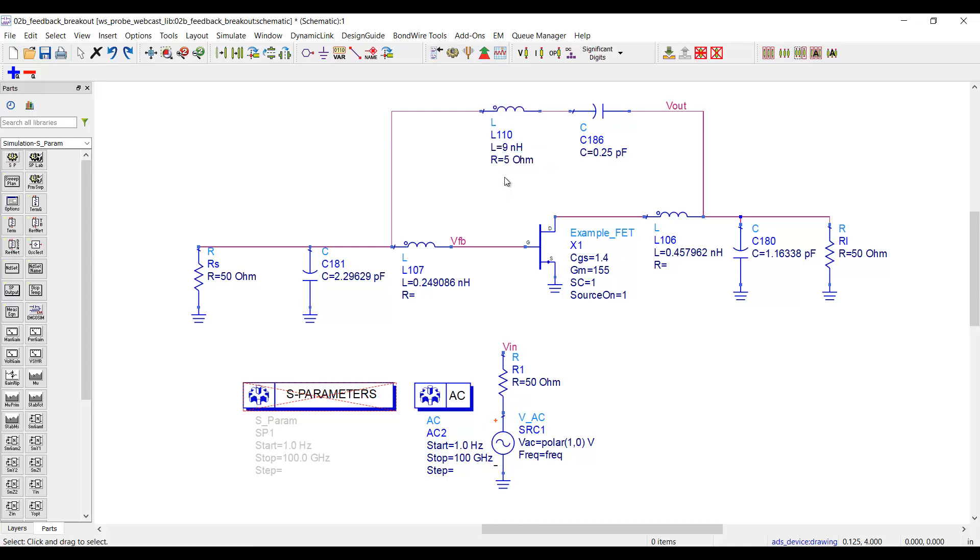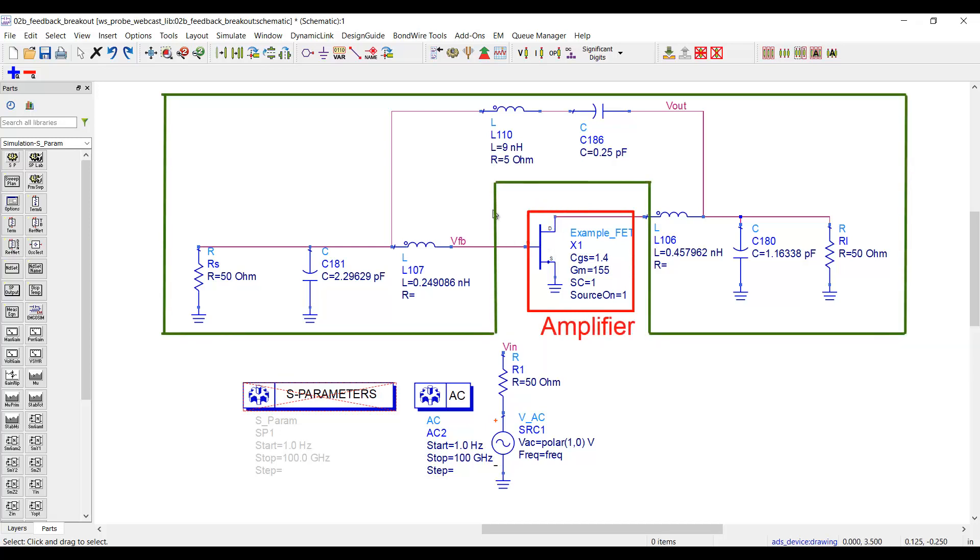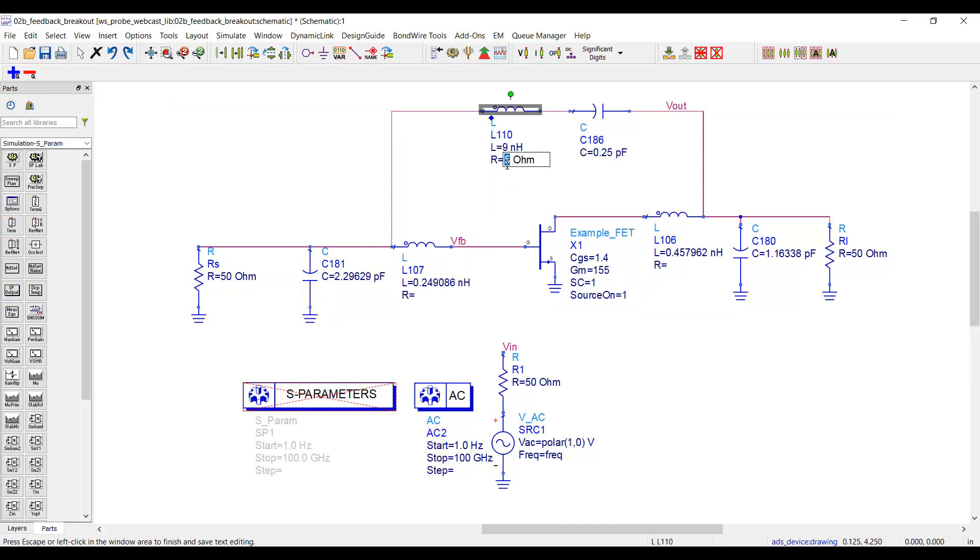In the last video, I designated the transistor as the amplifier block and the entire surrounding piece as the feedback block. And that was how I analyzed loop gain. Well, in this video, I'm going to actually go in and increase the feedback resistor value to make the circuit go right on the verge of stability. And I'm going to do that to illustrate a point, so bear with me here.